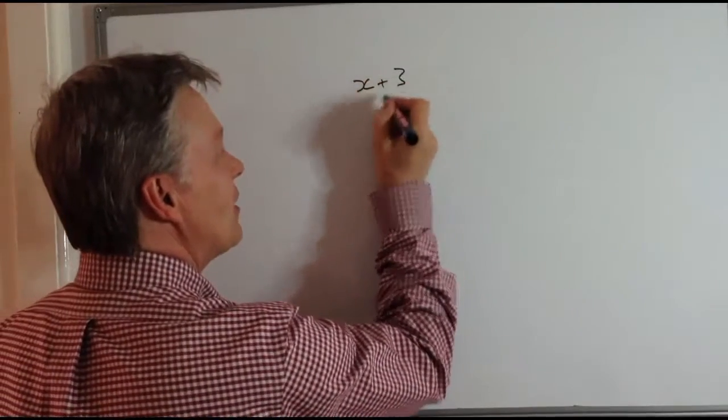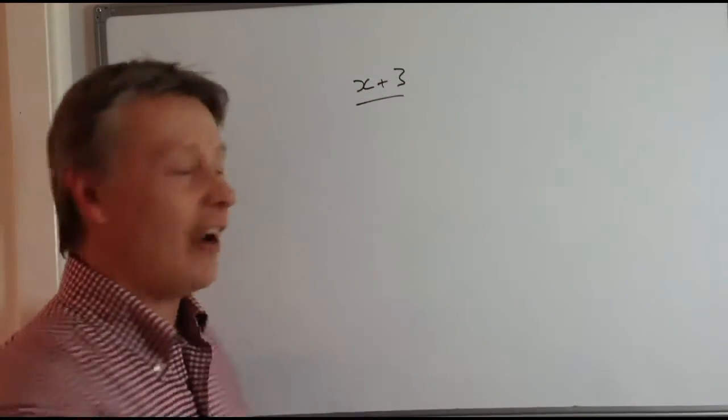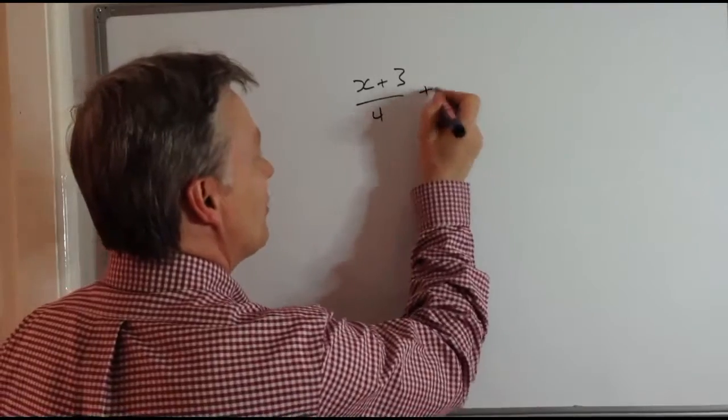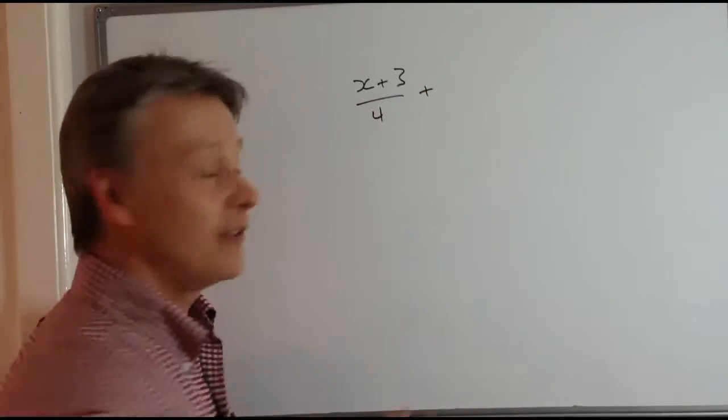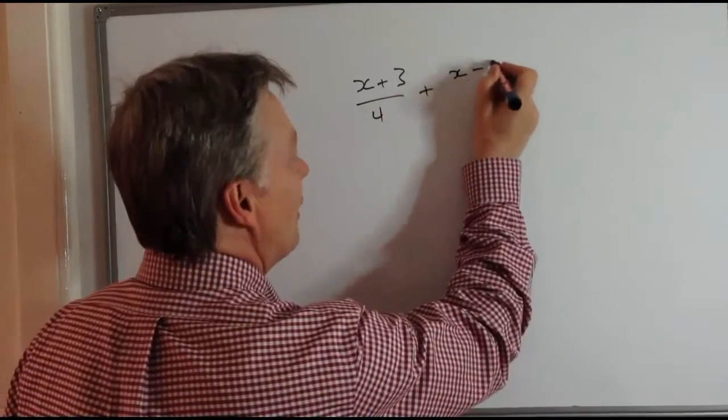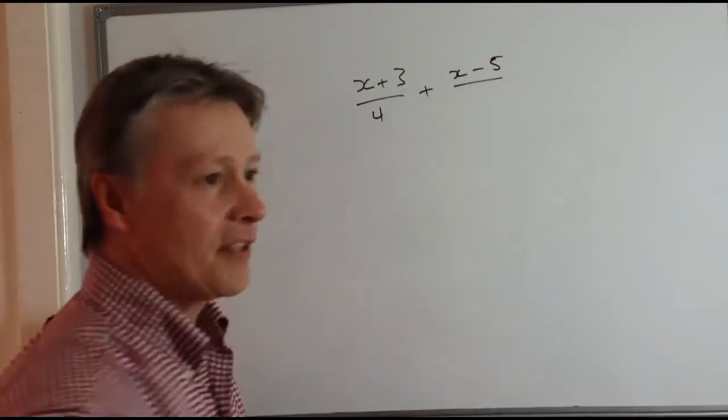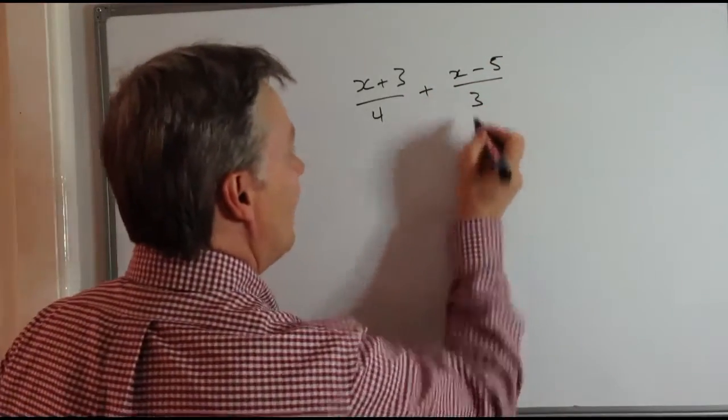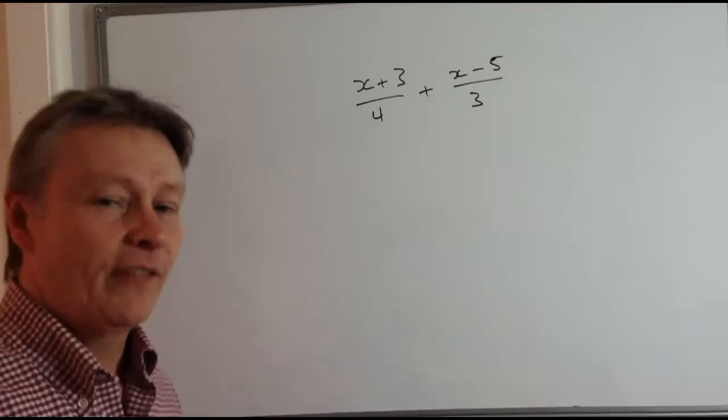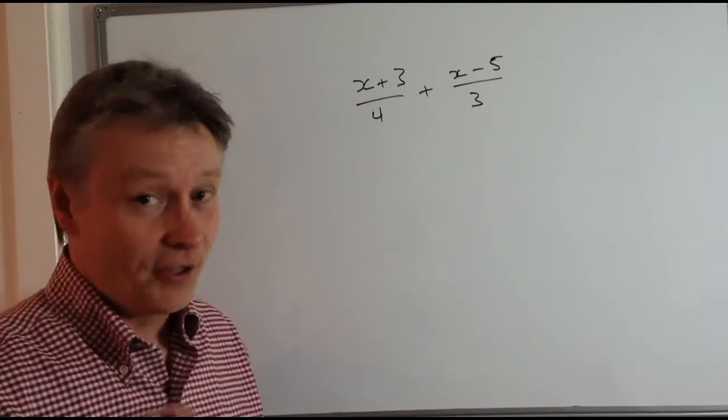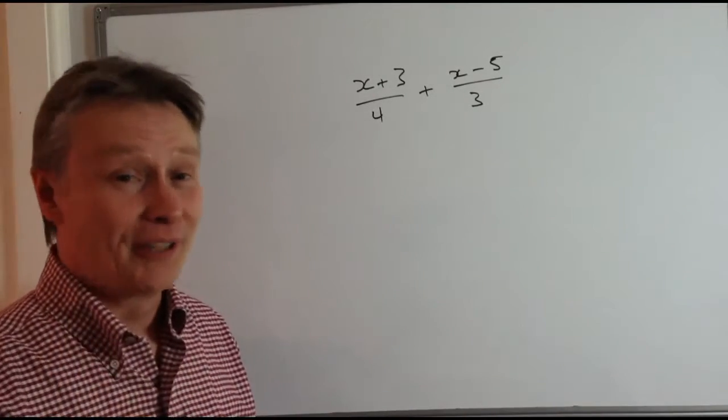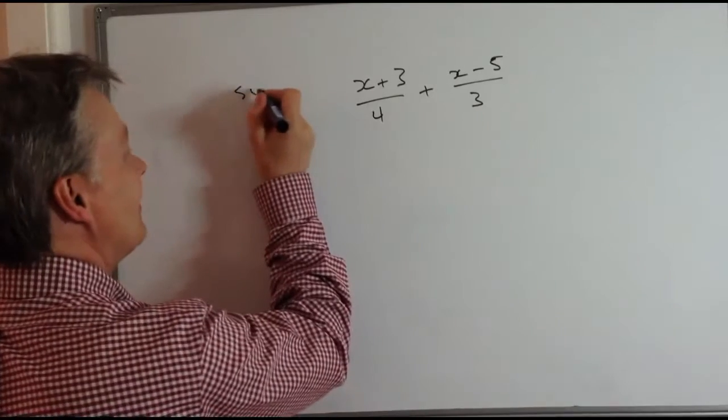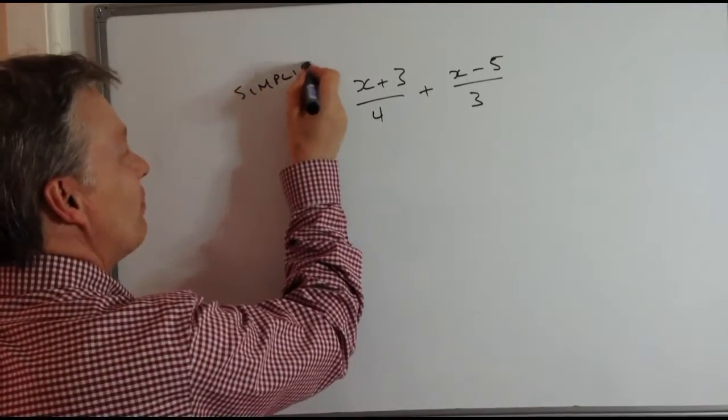I'm going to put up on the board this particular algebraic fraction, and it is (x+3)/4 + (x-5)/3. Generally with these types of questions, they give you one word, and what they actually say is simplify.